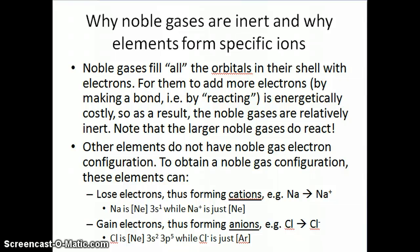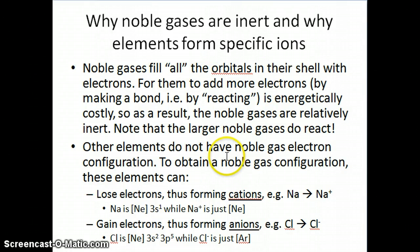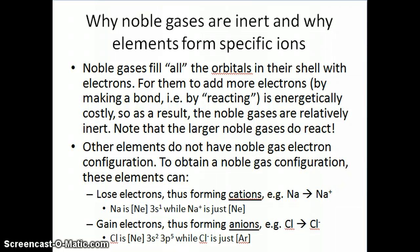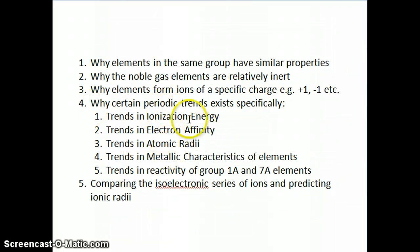In the previous video, I talked about some of the reasons why elements are grouped together and why some elements are inert — like the noble gases — and why some elements tend to form certain types of ions, like a plus-one cation for all the Group 1A elements and negative-one anions for all the Group 7A elements. Now we're going to talk about some of the different trends that we observe experimentally with certain properties, and we're going to try to explain why these trends are observed based on quantum mechanics.